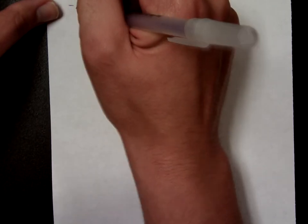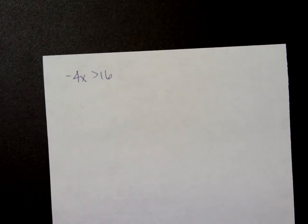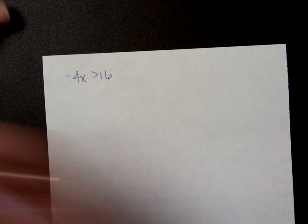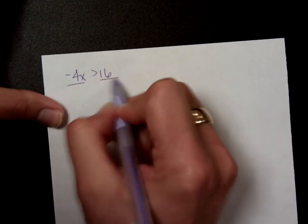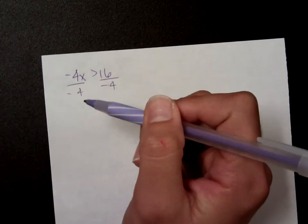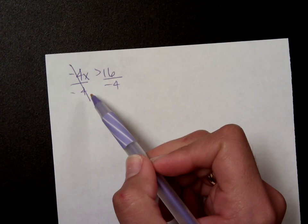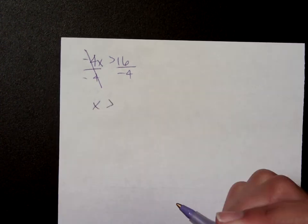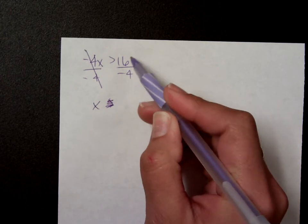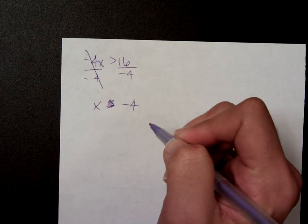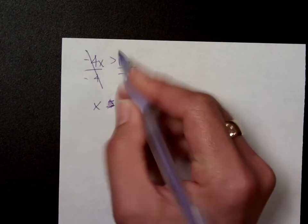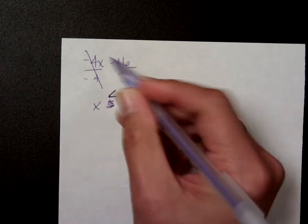Let me give you an example. What if I had negative 4x is greater than 16? Well, in order to undo this multiplication, I would have to do division. I have to divide both sides by whatever's in front of the x. Here, there's a negative in front of that x. So, I have to divide by negative 4. So on the left-hand side, the negative 4s cancel out to 1, and I'm left with x. And over here, my 16 divided by negative 4 gives me negative 4. But, since I divided by a negative number, this is now going to be a less than symbol, not a greater than symbol.